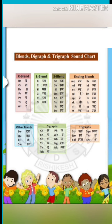Now let's see some digraphs. CK, CH, SH. TH — this is the soft sound of digraph TH. TH — this is the hard sound of digraph TH. Now, TCH. Children, CH says 'ch' as well as TCH says 'ch' as in match, as in batch, and this T is silent.